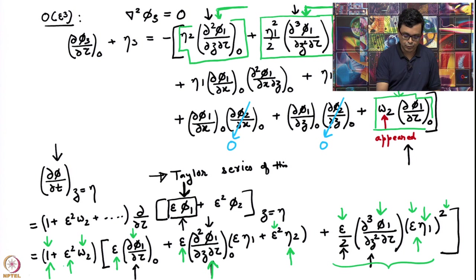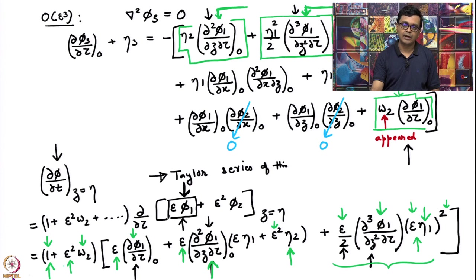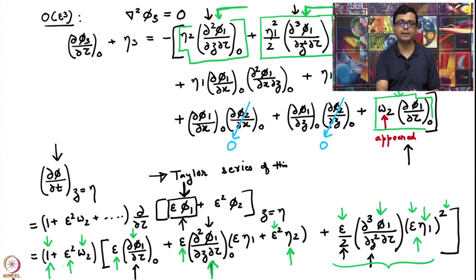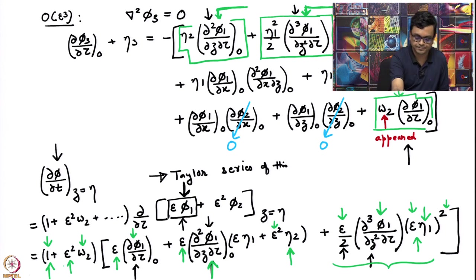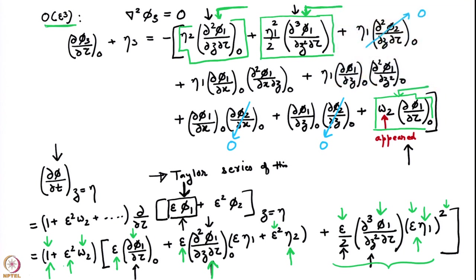There are other terms in the last line of this slide which have appeared. They are either order 1, order epsilon squared, or order epsilon to the fourth. If they are order epsilon squared, they would have already appeared in the previous equations. If they are order epsilon to the fourth, they will appear in the next set of equations. We are not going to write those. We are only focusing on the terms which appear at order epsilon cubed, and we have now explained how these 3 boxed terms come from.